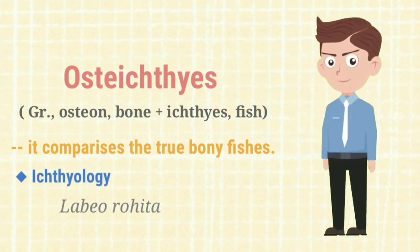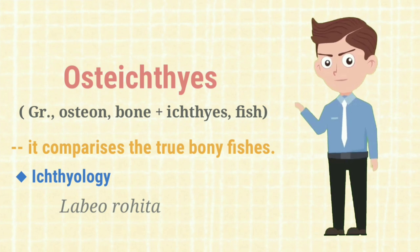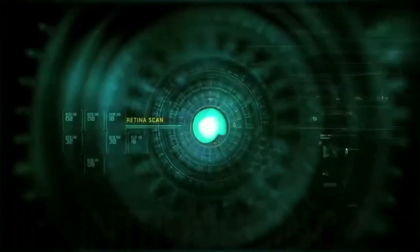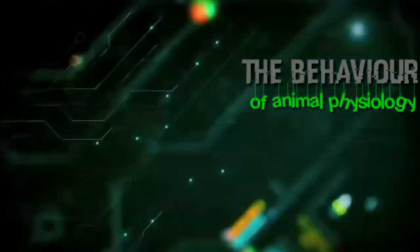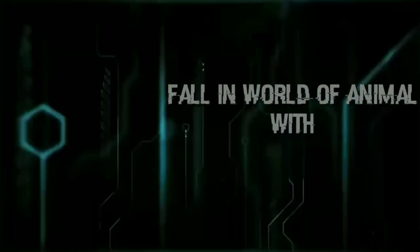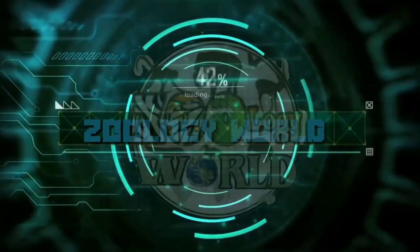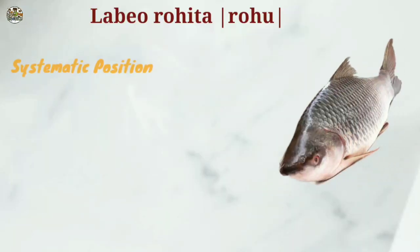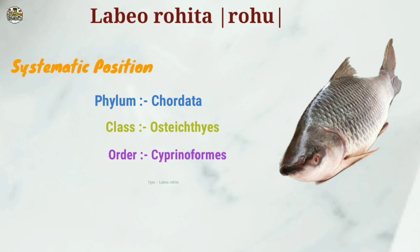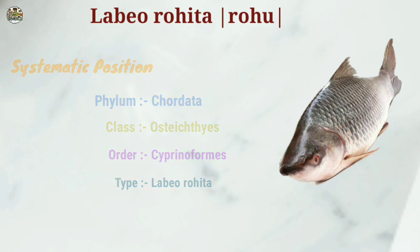Today we will discuss Labeo rohita. Systematic position: Phylum Chordata, Class Osteichthyes, Order Cypriniformes, Type: Labeo rohita.